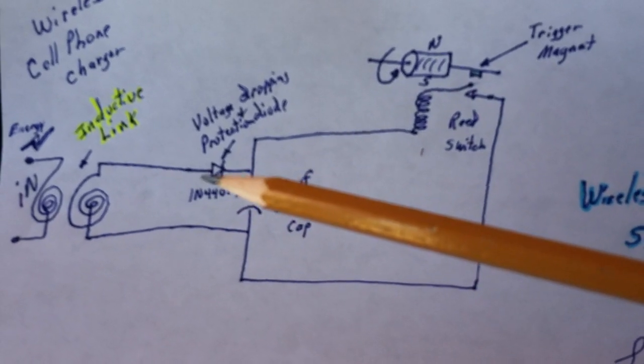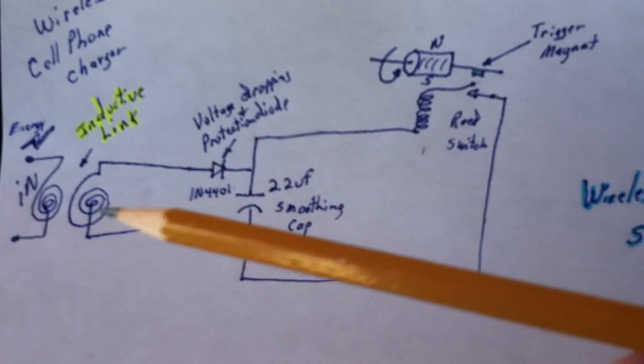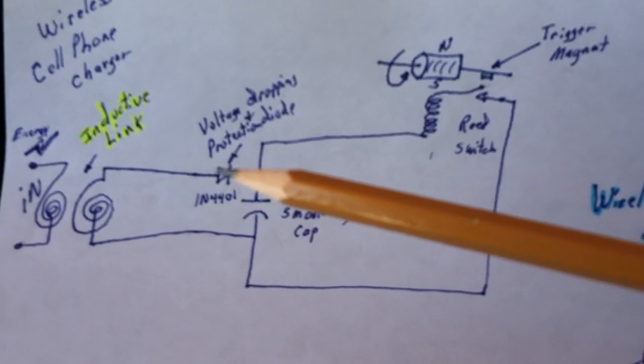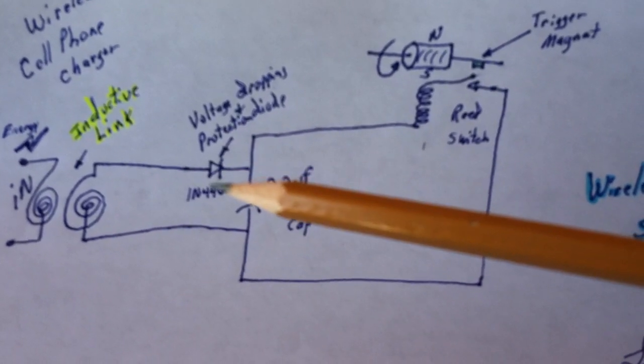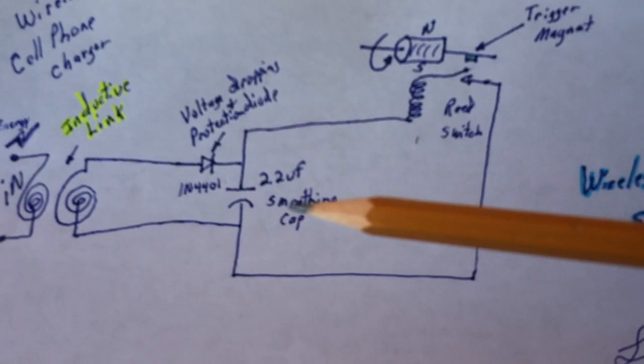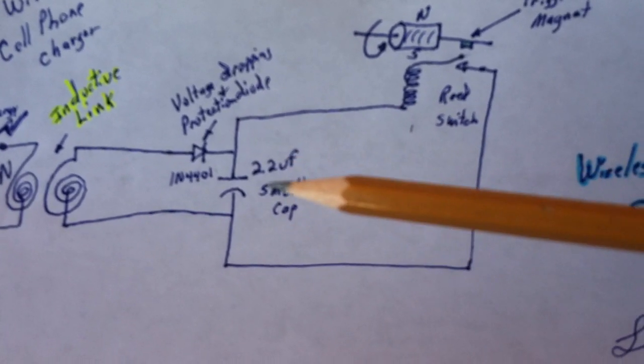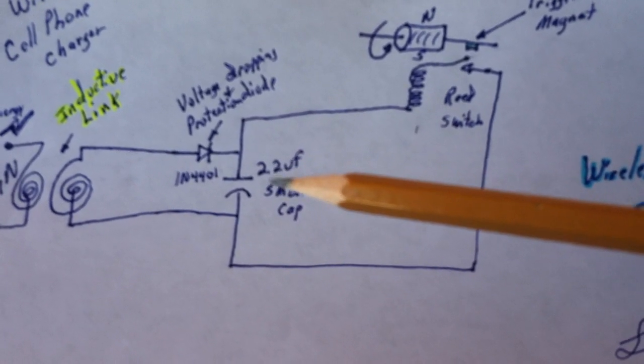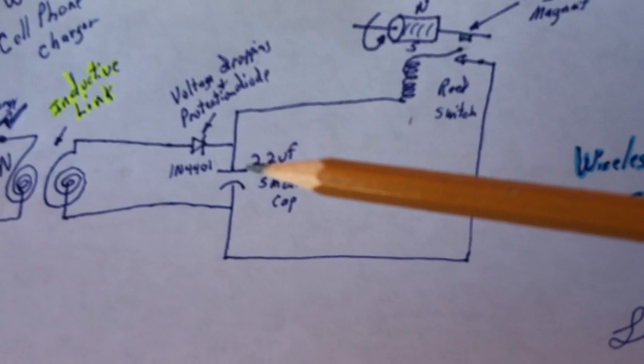I've got a diode here between the pickup coil and the main circuit to drop the voltage from the 5 volts down, and also has a protection diode. Then a little smoothing capacitor. The reason I've got this here is I'm going to show other capacitors you could put in there.